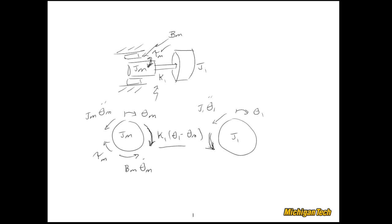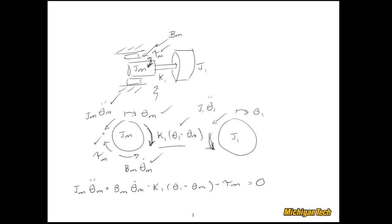Let's go ahead and sum up all of our moments, working with the Jm disk first. Jm * theta_m_double_dot plus bm * theta_m_dot minus K1*(theta1 minus theta_m) minus tau_m equals zero. And now for the other disk: J1 * theta1_double_dot plus K1*(theta1 minus theta_m) equals zero. Done — put a box on it.